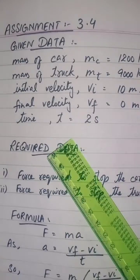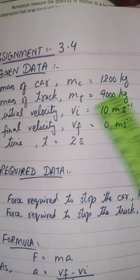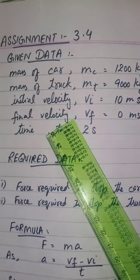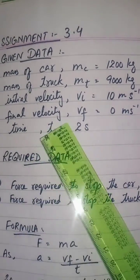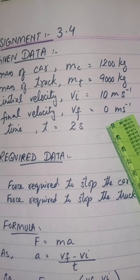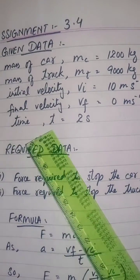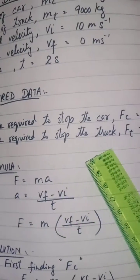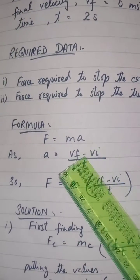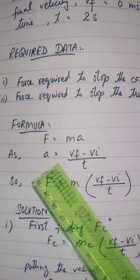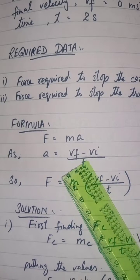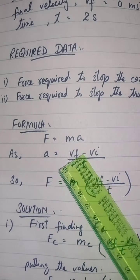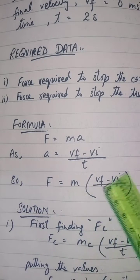Given data for assignment 3.4: mass of car mc = 1200 kg, mass of truck mt = 9000 kg, initial velocity vi = 10 m/s (moving), final velocity vf = 0 m/s (to stop), time t = 2 seconds. Required: force to stop the car (fc) and force to stop the truck (ft). Formula: F = ma, and a = (vf − vi) / t, so F = m(vf − vi) / t.